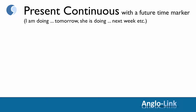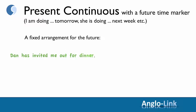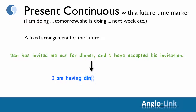Then we contrasted going to with present continuous with a future time marker — I'm doing something tomorrow, she's doing something next week, etc. As you will remember, this refers to a fixed arrangement for the future. For example: Dan has invited me out for dinner and I've accepted his invitation — we have a date — so you should say: I'm having dinner with Dan tonight.